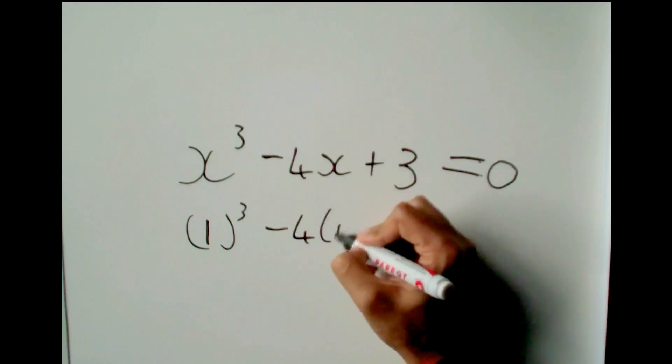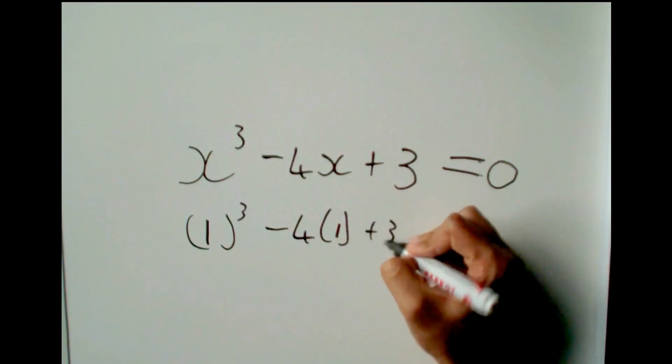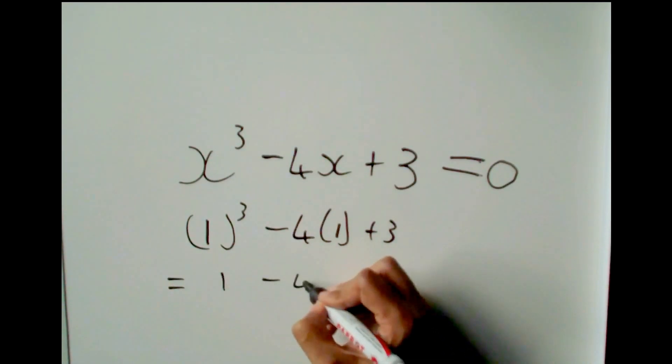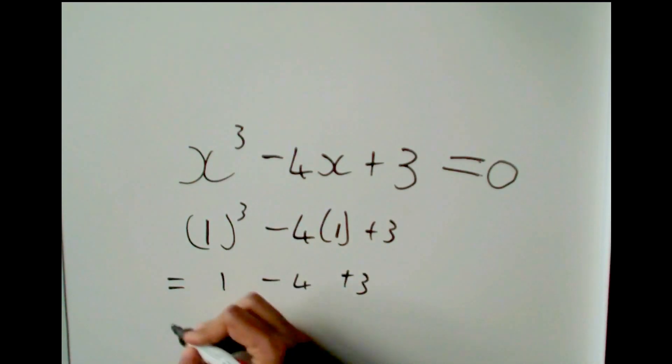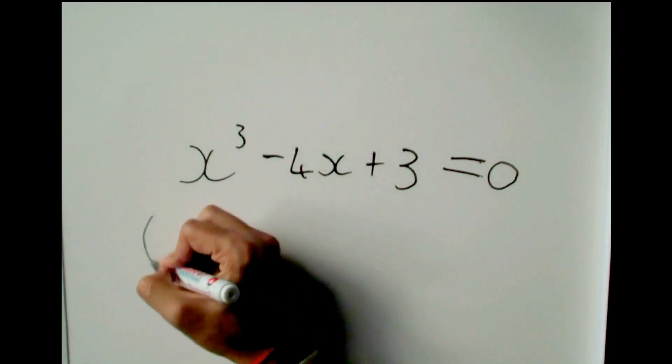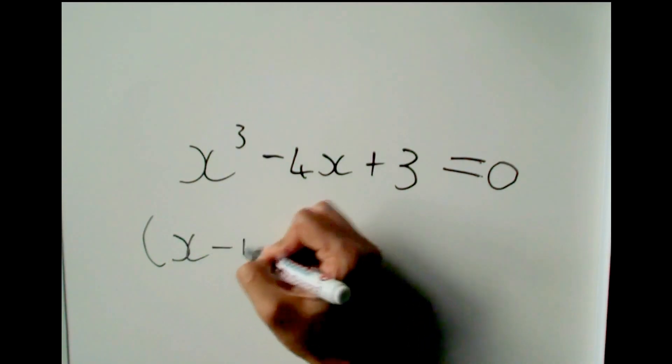I put positive 1 where x is, and I get minus 4, 1 plus 3. Let's see, what is this equal to? It's 1 minus 4 plus 3, which is equal to zero. So I know that if I put minus 1 into this side of the equation, I will end up with zero. That means that positive 1 is a root.